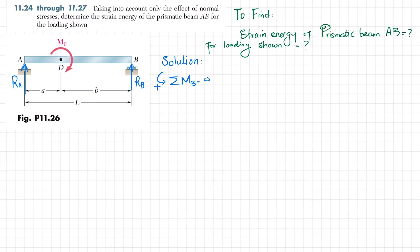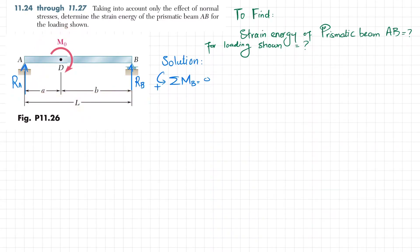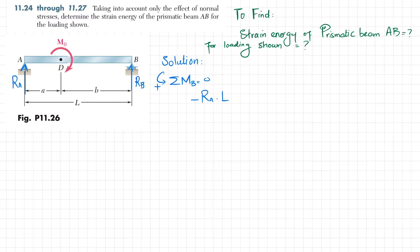About point B, the first moment is due to R_A with perpendicular distance L, and it is producing clockwise, so it will be negative: minus R_A times L. There is also the external moment M0 applied at point D, which is also clockwise, so it contributes minus M0. Their sum must be equal to zero.